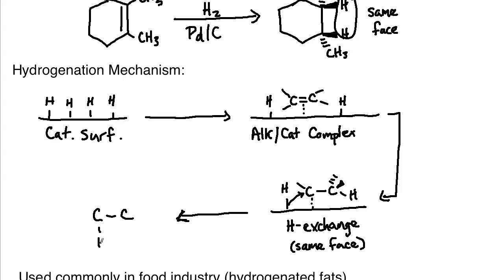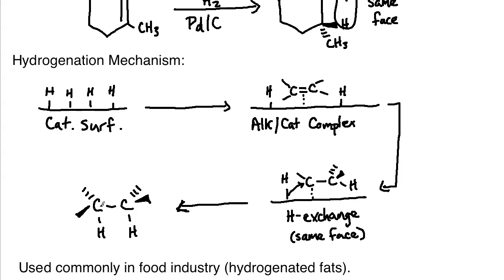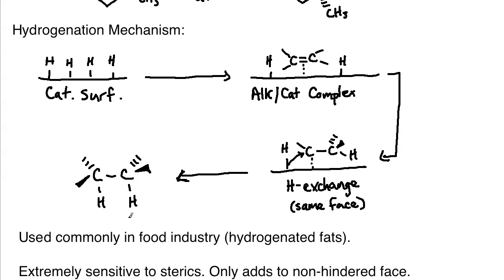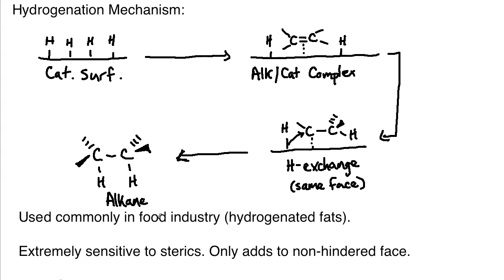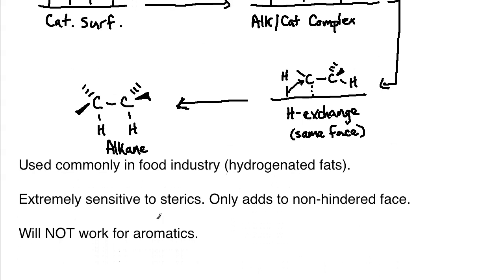Once that's done and the prior alkene has been turned into an alkane, it is released. And then you have your product, which would be the alkane. The hydrogens would be adding to the same face or the same side, and we end up with an alkane or a saturated form of the hydrocarbon.